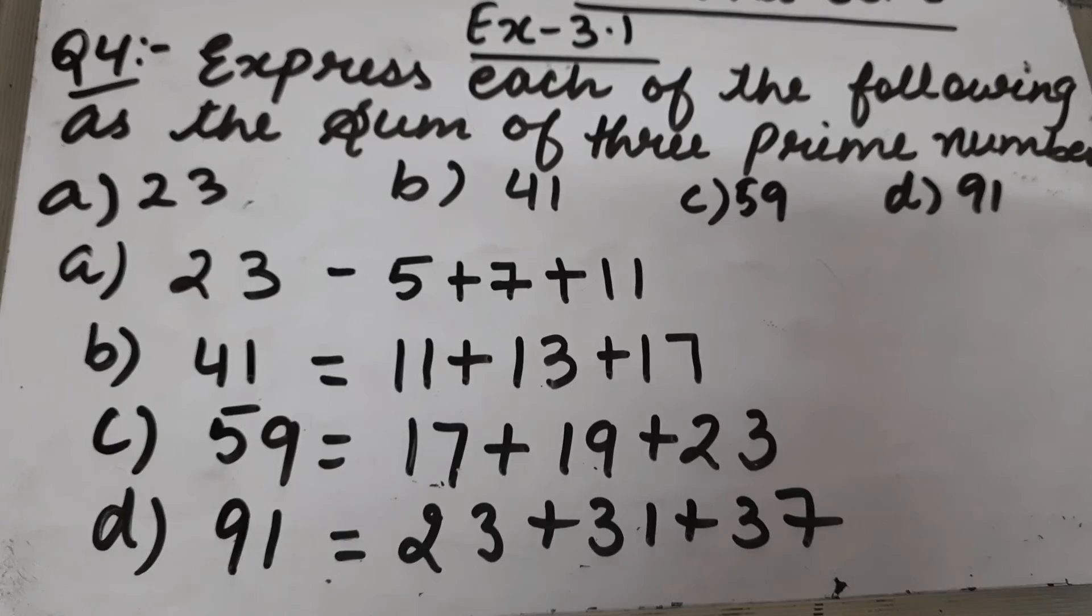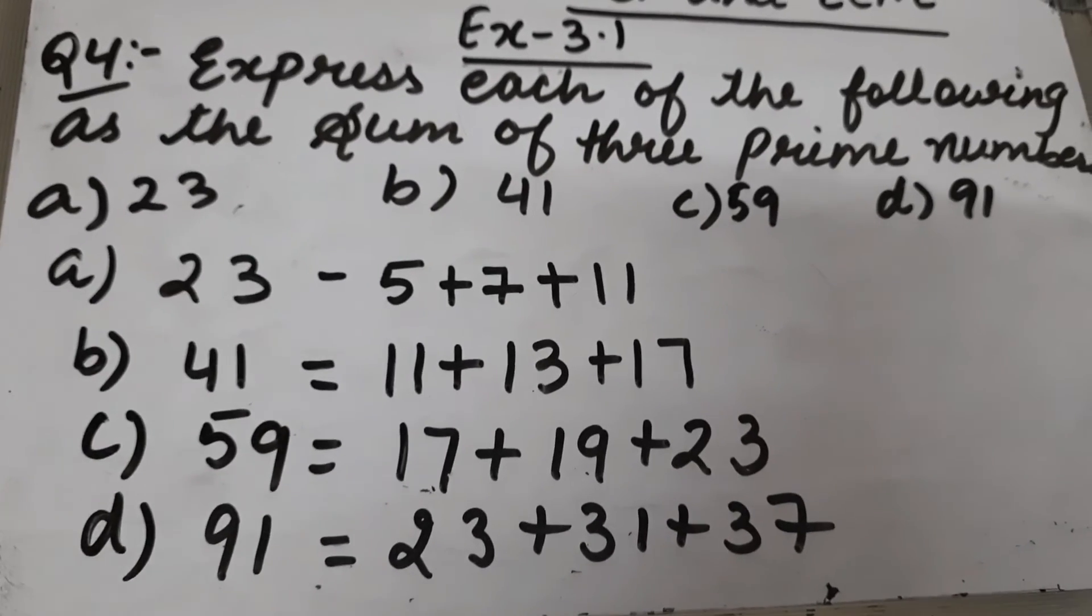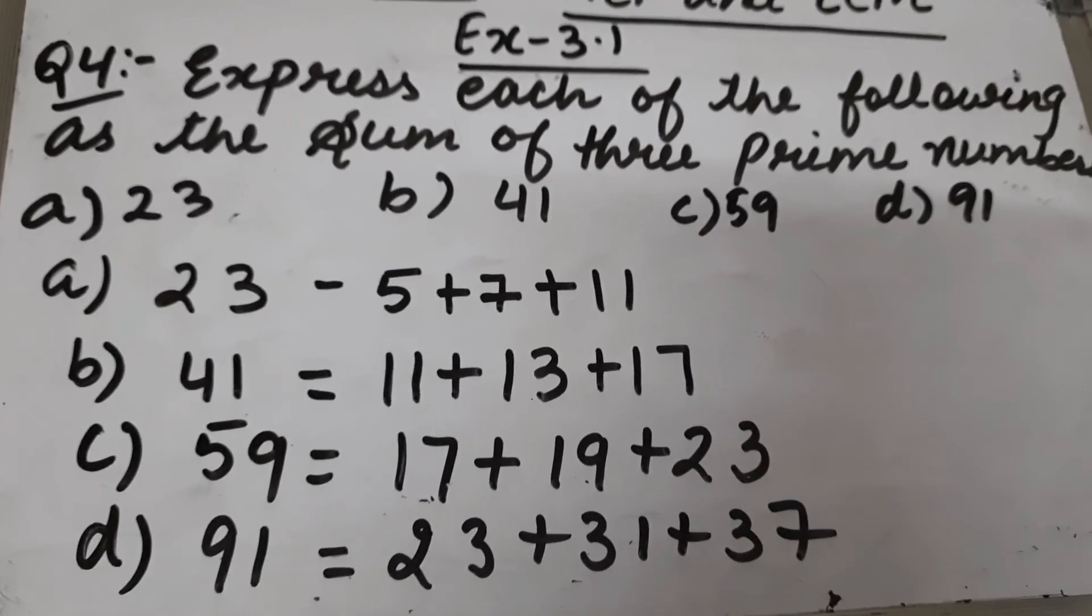So this way we represent a number as sum of three prime numbers. This is question number fourth of exercise 3.1.